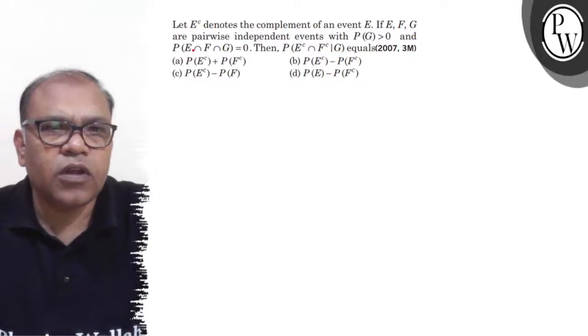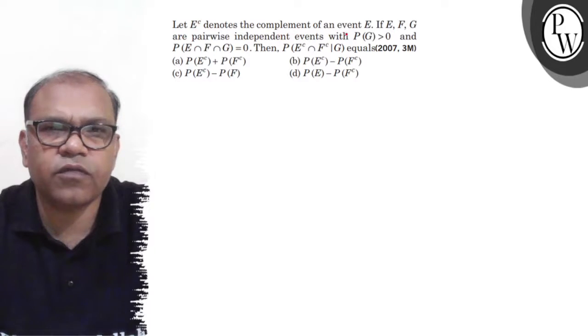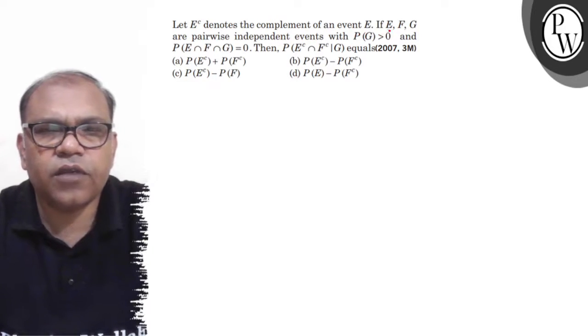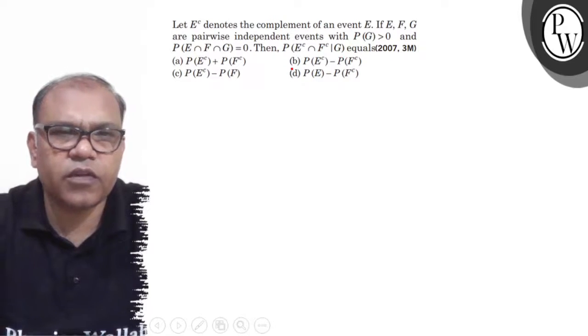Hello Bacho, let's see the question. The question says, let E^c denotes the complement of an event E. If E, F, G are pairwise independent events with P(G) greater than 0 and P(E ∩ F ∩ G) equals 0, then P(E^c ∩ F^c | G) equals - four options are there.